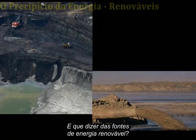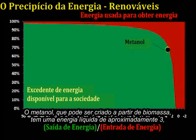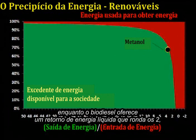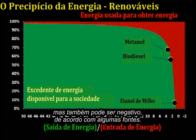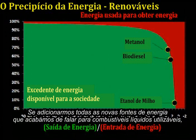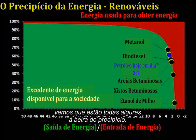And what about renewable energy sources? Methanol, which can be made from biomass, sports a net energy of about 3, while biodiesel offers a net energy return of somewhere around 2. Corn-based ethanol, if we're generous, might produce a net energy return of just slightly over 1, but could also be negative according to some sources. If we add in all these new sources for usable liquid fuels, we see that they are all somewhere on the face of the cliff.